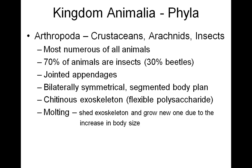Here we have our phylum Arthropoda — my crustaceans, arachnids, and insects. This phylum is huge — this is the most numerous of all animals. 70% of animals are insects, and within that 70%, 30% of those are beetles. Arthro means joint, poda or pod means leg, so jointed appendages — Arthropoda.